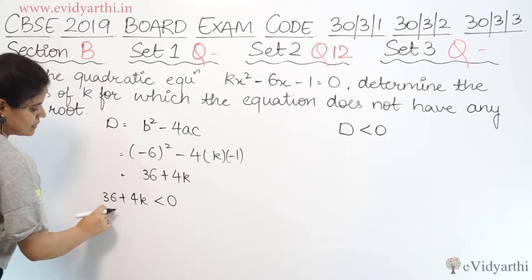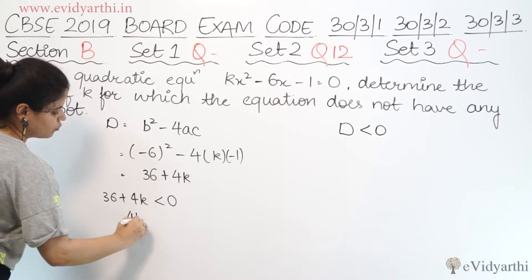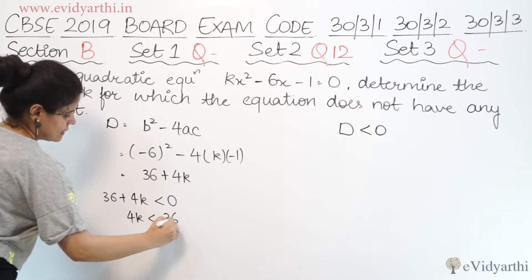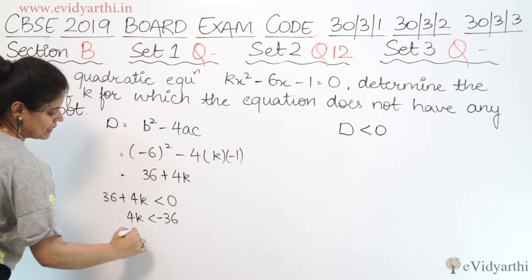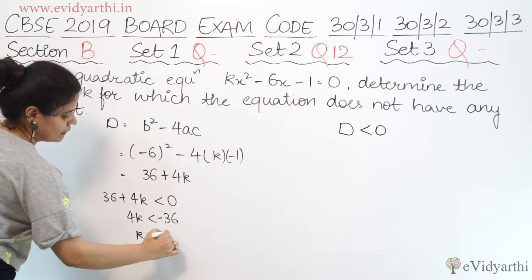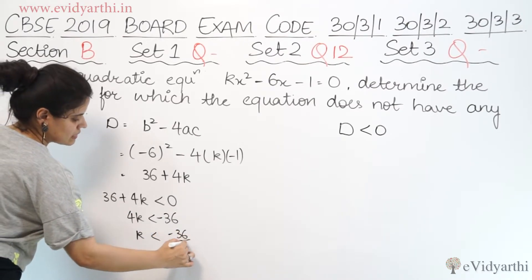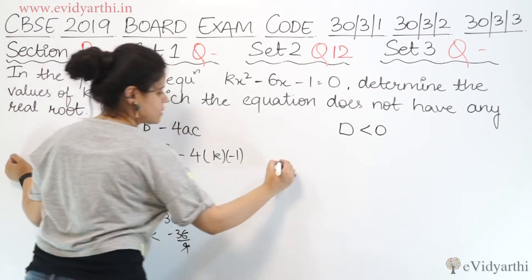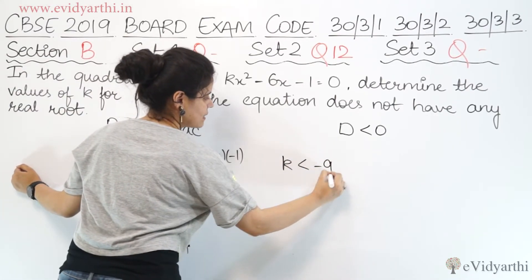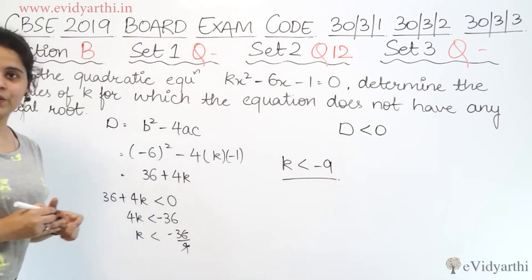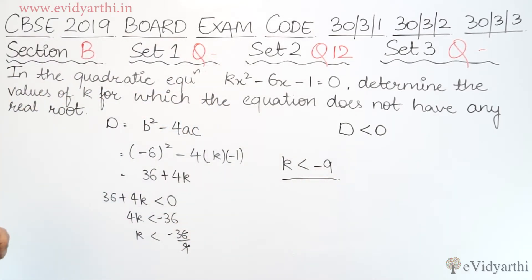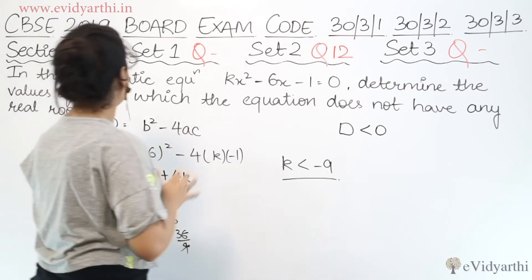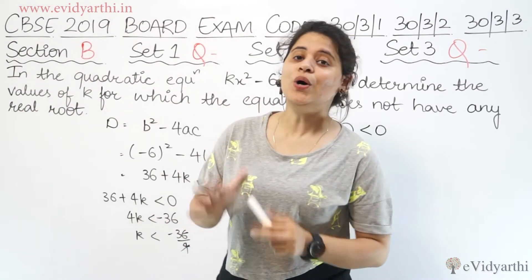This gives us k less than negative 9. So this is our question number 12 of set 2 with section B complete.